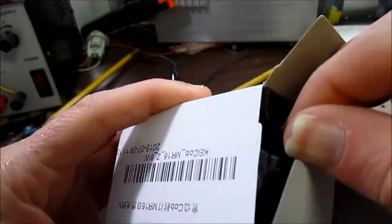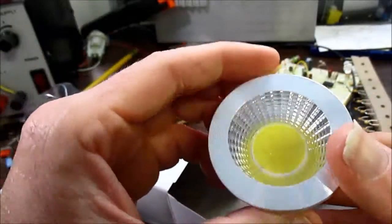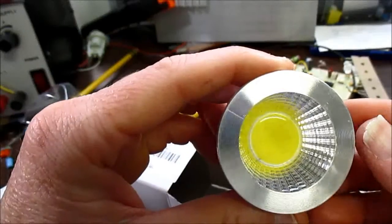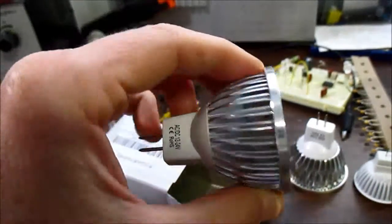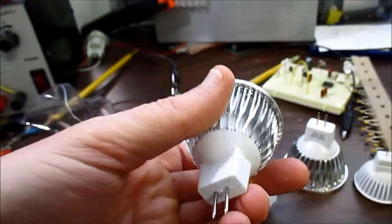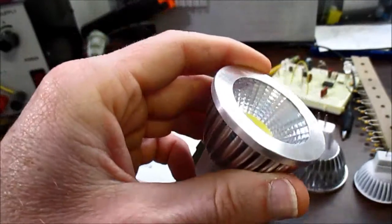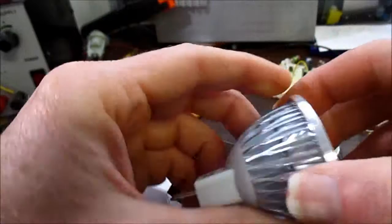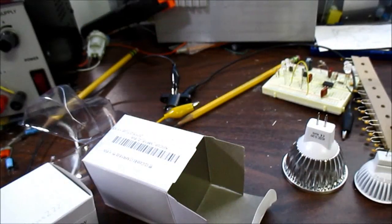This is what you get here. It's a chip on board style LED. It's a fairly large heat sink, deeply fluted. That's a plastic lens. And the bi-pin base.